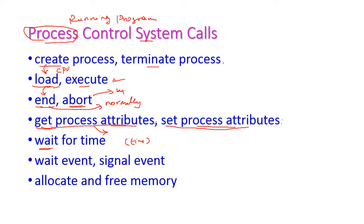If you want to get the attribute of a process, get process attribute system call is used; simultaneously we have set process attribute system call to set the process attribute. The next one is wait — this is used to wait for some time, for example some milliseconds, where process execution should be held. We also have wait event, where the process will wait for some other event, and signal event system call. Finally, allocate and free memory system calls are used to allocate space in main memory for that process and to free that memory after execution.